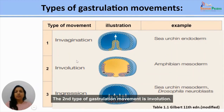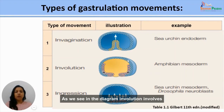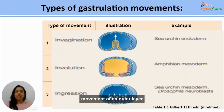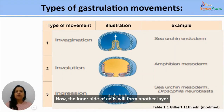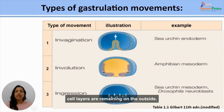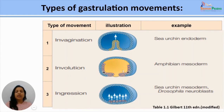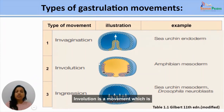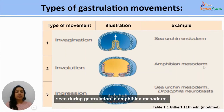The second type of gastrulation movement is involution. As seen in the diagram, involution involves movement of an outer layer of cells onto its inner side, where it forms another layer that spreads over whatever cell layers remain on the outside. Involution is seen during gastrulation in amphibian mesoderm.